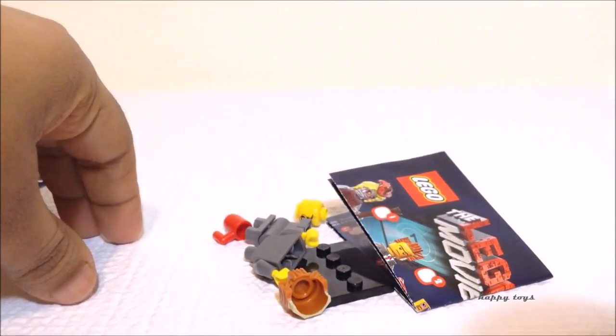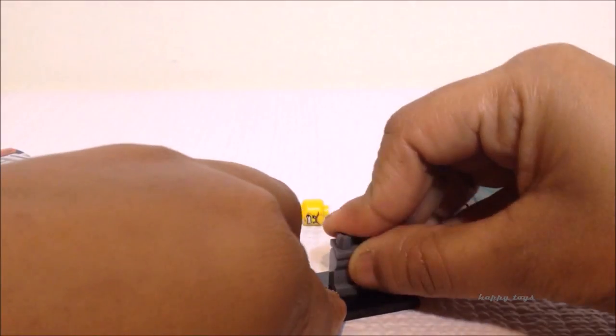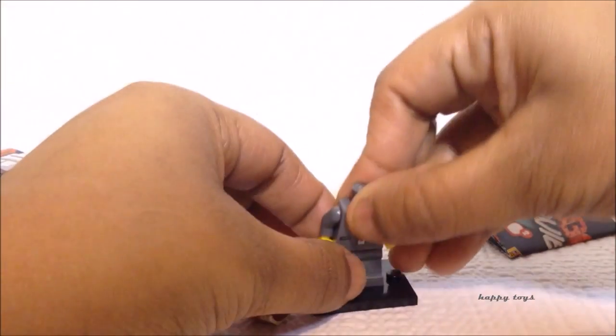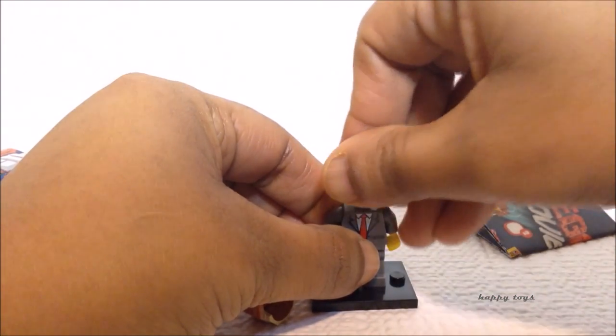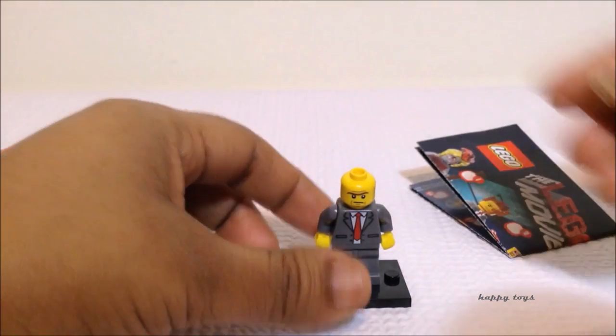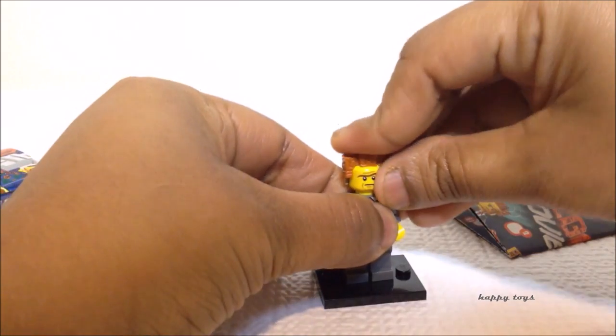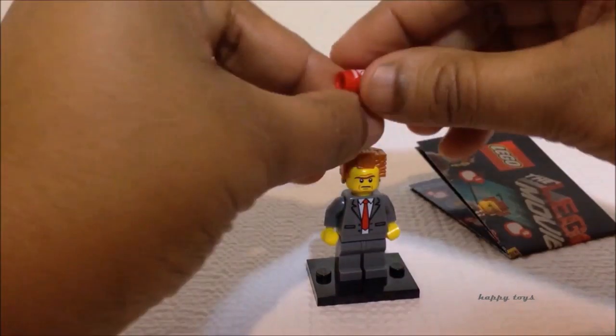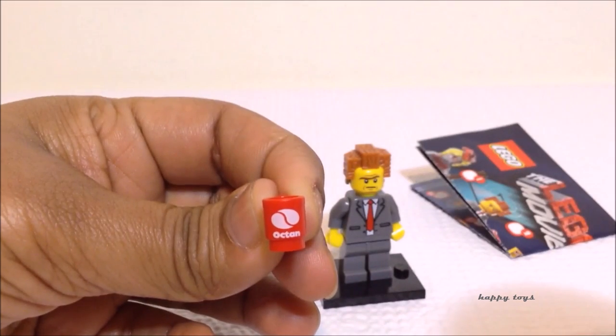Here we go for the next one. Yeah, this is also someone we have seen already. It's a gray suit. Yeah, exactly, it's President Business with angry face. Yeah, look at his cup with the Octan logo.